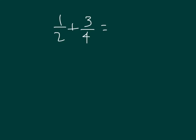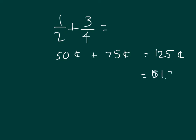We do know also, however, that we could look at this by thinking about money. If we have one-half, or one-half of a dollar, we would be thinking about 50 cents. If we had three-quarters of a dollar, we would be talking about three-quarters, which is worth 75 cents. And if we put those two together, we would have 125 cents, which is more than a dollar. In fact, 125 cents is $1.25.